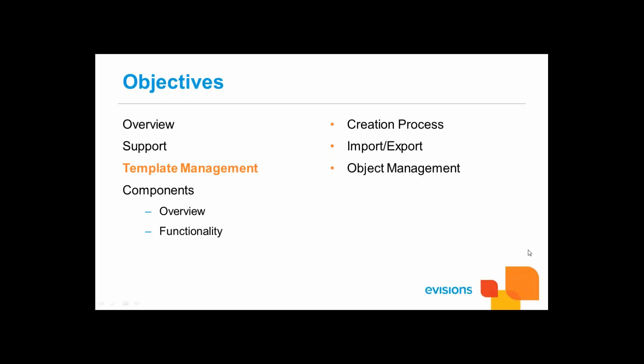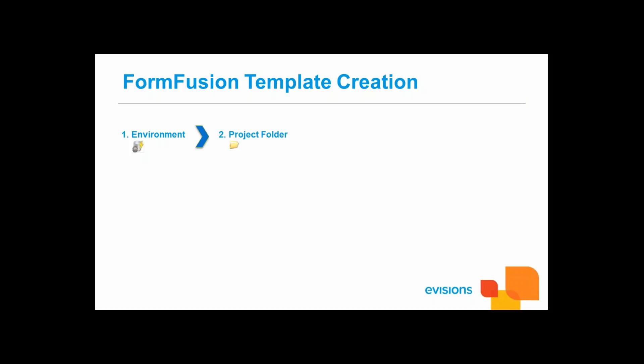Now we're going to talk about template management. We'll review the creation process of a FormFusion template. There are seven steps to creating a basic template; optional steps are more advanced and will be discussed in the FormFusion advanced training. First, we have environments — containers created by the administrator defining the database connection and the default printer. Next, you would create a project folder in the process tree under one of the environments. You can also have folders within folders for better organization.